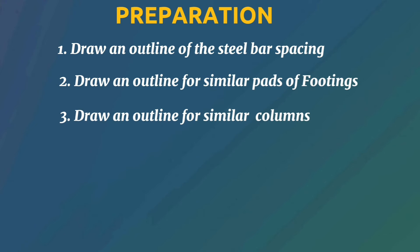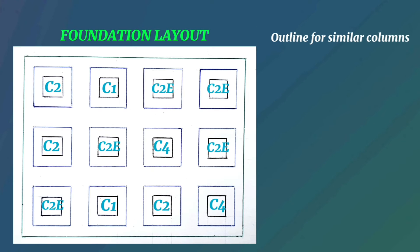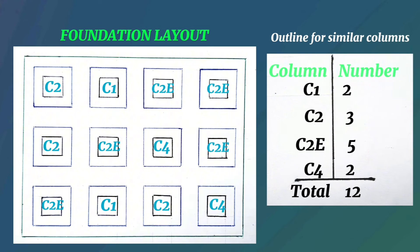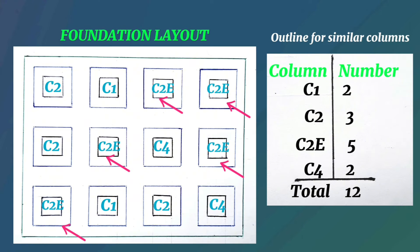The third step is to draw an outline for similar columns. Just as done for pads or footings, identify similar columns and draw a table categorizing columns of the same size together. For example, using the foundation layout top view, draw a table with column types on the left and quantities on the right. In our example, we have two C1 columns, three C2, five C2E, and two C4. You then calculate the steel bars for a single column — for example C2E — and multiply by five to get the total for all five.